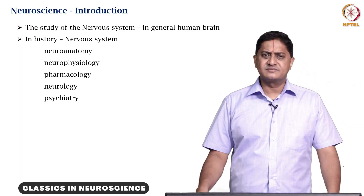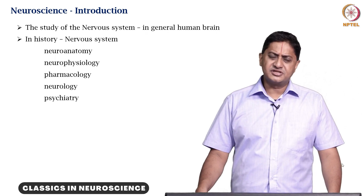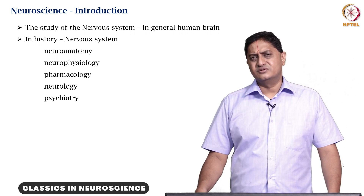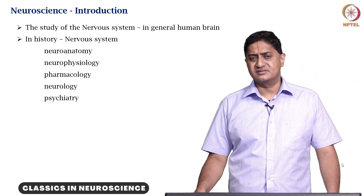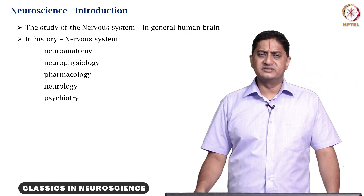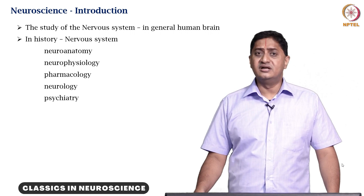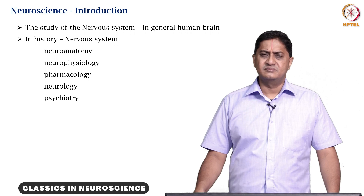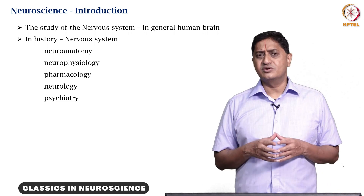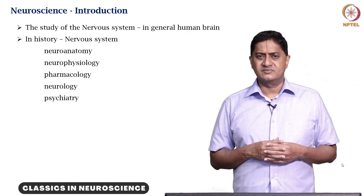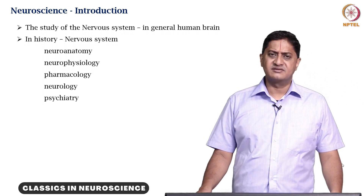What is neuroscience? Neuroscience is the study of the nervous system in general. That would mean the study of rudimentary nervous systems — systems found, for example, in invertebrates or even early vertebrates. But in particular, whenever we say neuroscience, we are referring to human neuroscience. In general, we are interested in studying the human brain and its function.